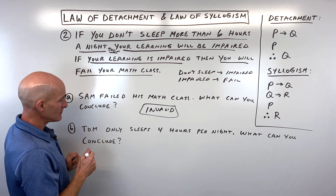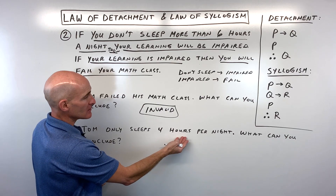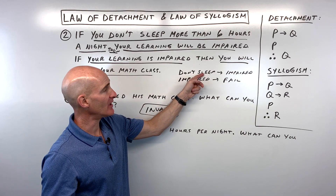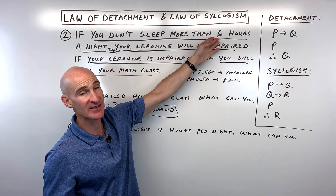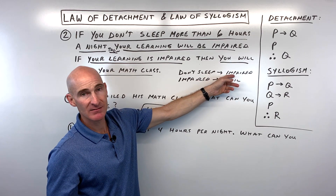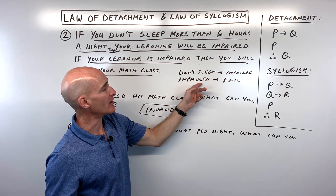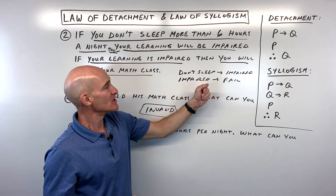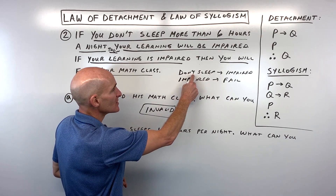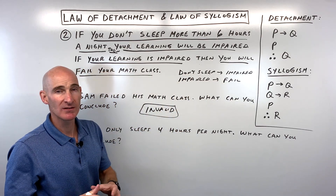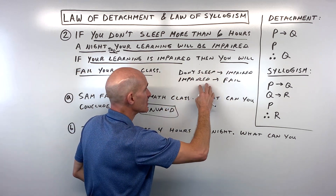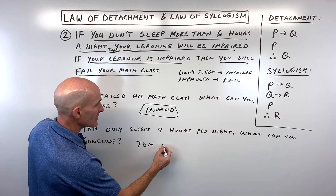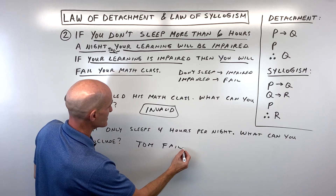Let's look at letter B: Tom only sleeps four hours per night — what can you conclude? Tom doesn't sleep very much — he's sleeping less than the six hours per night. So that means his ability to learn is going to be impaired. And if his learning is impaired, we know that means he's going to fail his math class. Because this initial condition was fulfilled, this chain of events is going to be triggered. This is the law of syllogism, and we know that Tom is going to fail his math class.